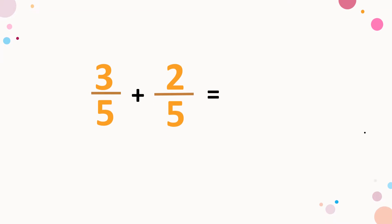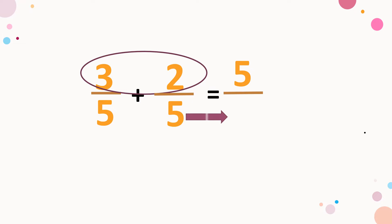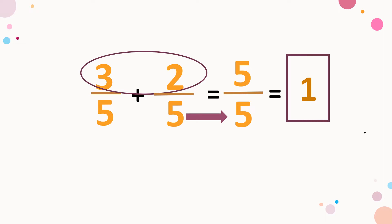Next, three over five plus two over five, or three-fifth plus two-fifth. Add the numerators: three plus two, that is equal to five. Copy the common denominator, five. And then, five divided by five is equal to one. That's the final answer.